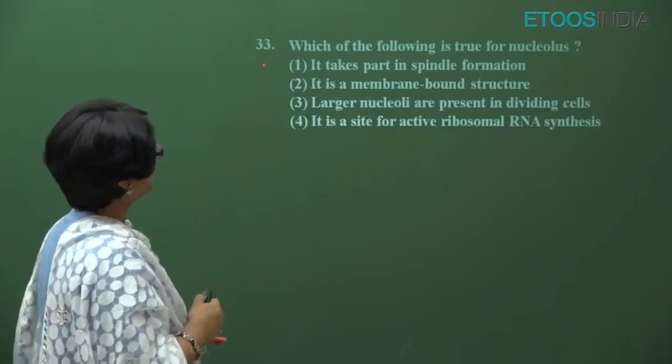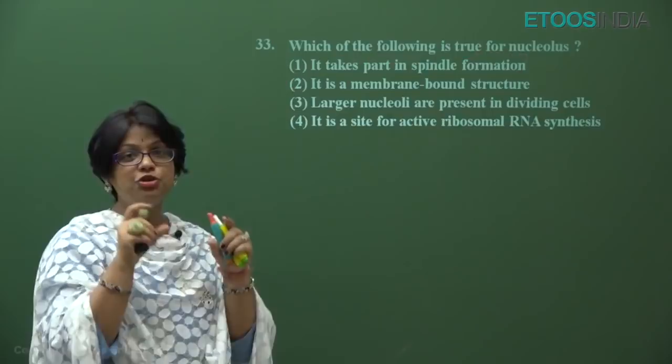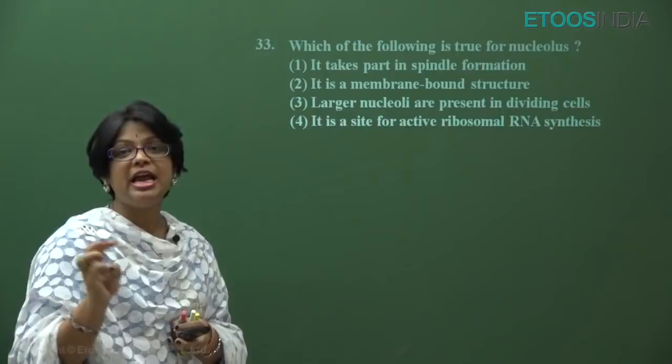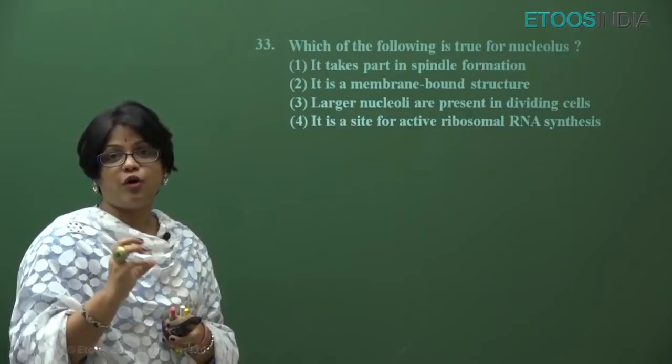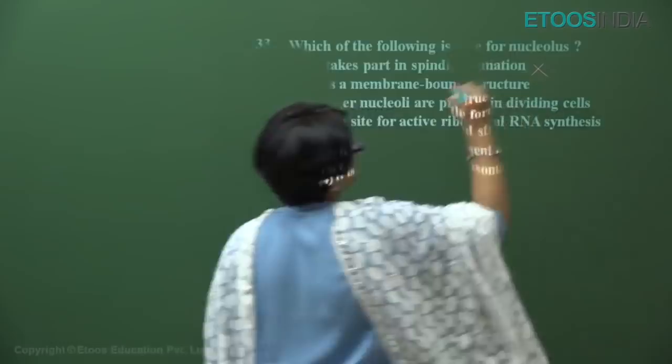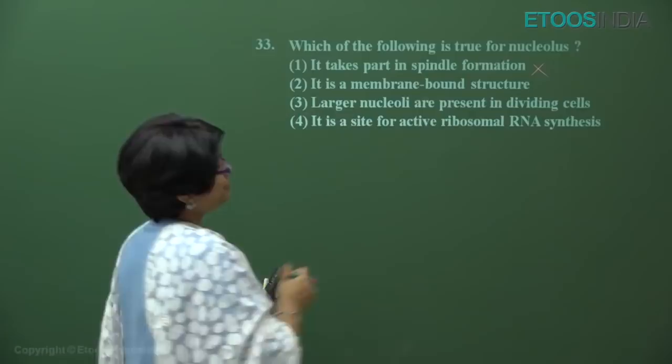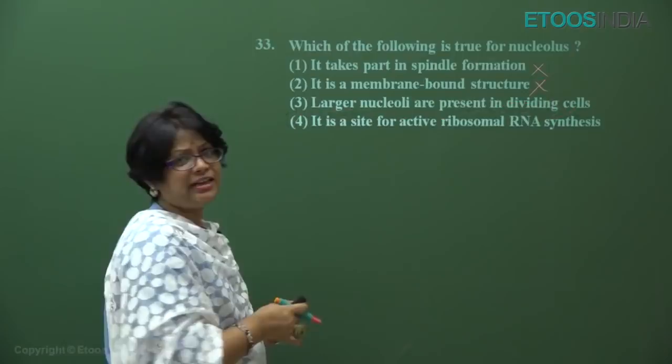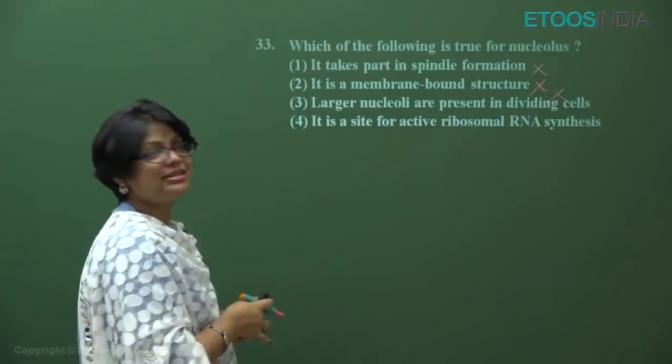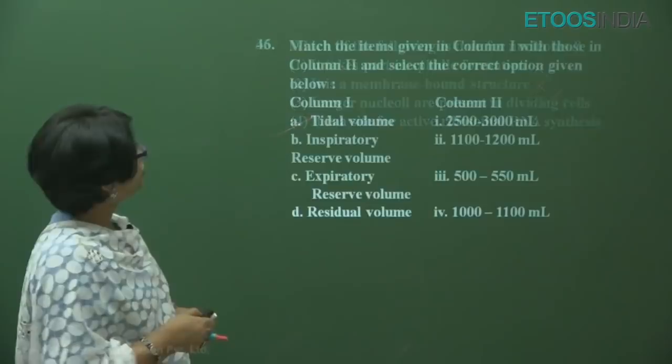Question number 33: which of the following is true for nucleolus? The nucleolus is a non-membranous structure inside the nucleus, and its main function per NCERT is synthesis of rRNA. Spindle fiber formation is done by centriole; nucleolus is not membrane-bound; there is no concept of larger nuclei in dividing cells. The nucleolus is the site for active rRNA synthesis. It's a direct question — answer is four.